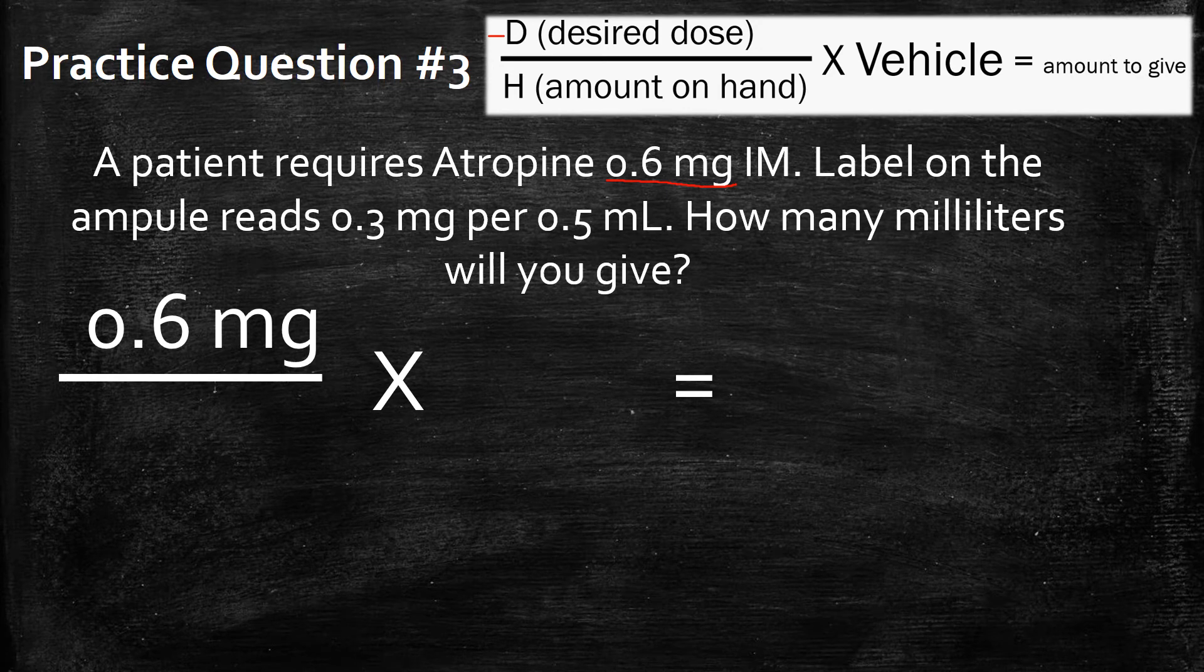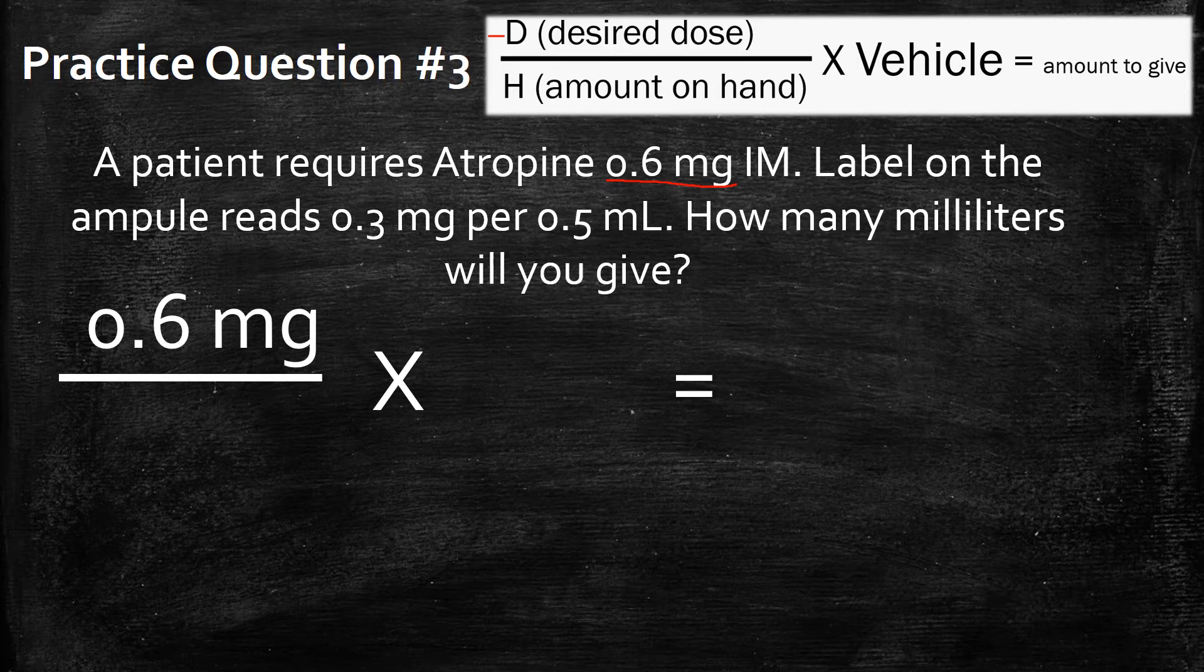The next part is the amount on hand. What does this unit have available? Well, they have an ampoule that reads 0.3 milligrams per 0.5 milliliters. So on hand, they carry 0.3 milligrams because the amount on hand is always going to be in milligrams. So let's put that into the formula.